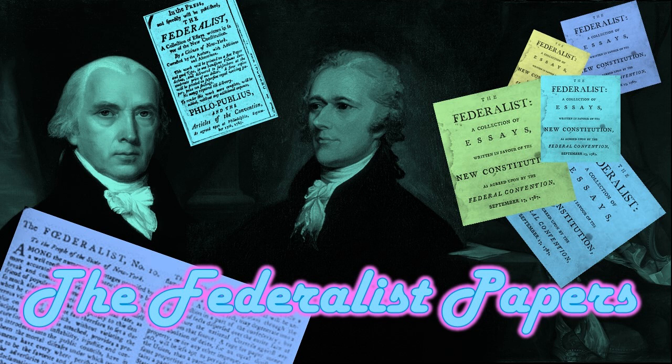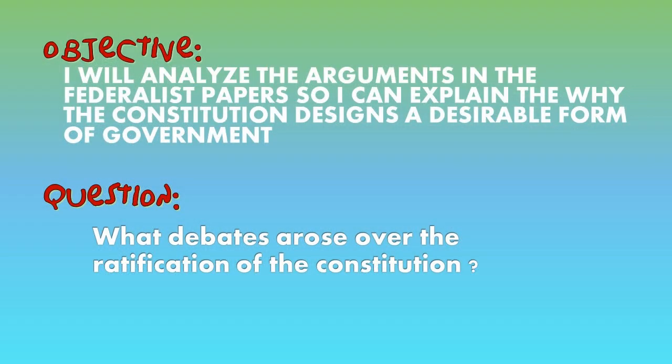The last step in discussing the Constitution is going to be looking at the debates over ratification. We're going to spend some time looking at the different arguments of the Federalists and the Anti-Federalists, focusing on a couple of the important Federalist Papers. We want to be able to describe the arguments made by the Federalists, explaining why the Constitution is a better plan for government than the Articles of Confederation. We'll get those arguments from Federalist number 10 and Federalist number 51.